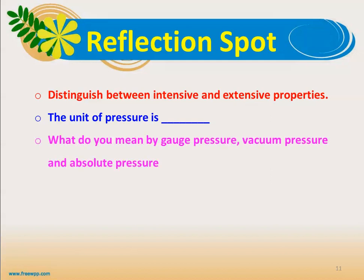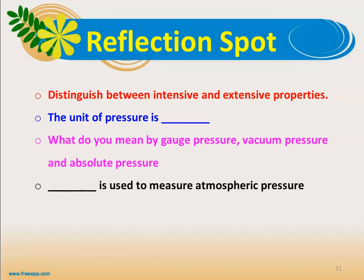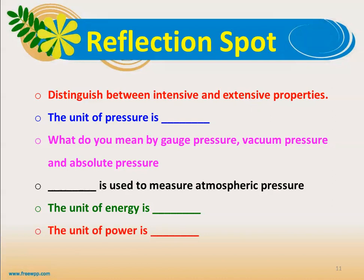What do you mean by gauge pressure, vacuum pressure, and absolute pressure? Gauge pressure is measured with a pressure measuring instrument with atmospheric pressure as reference — it is pressure above atmospheric. Pressure below atmospheric is vacuum pressure. For absolute pressure, the reference is zero absolute pressure. A barometer is the instrument used to measure atmospheric pressure. Unit of energy is newton-meter or joule; unit of power is joules per second or watts.